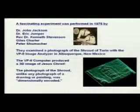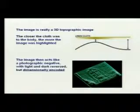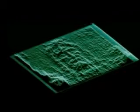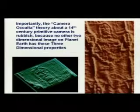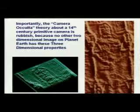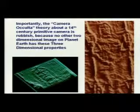There is no other two-dimensional image on the planet that will do this because this shroud is dimensionally encoded. The shroud is actually a three-dimensional topographical image — the closer the cloth was to the body, the more the image was highlighted, and the image acts like a photographic negative with light and dark reversed but dimensionally encoded. It's this dimensional encoding which is so unique, which is why I'm absolutely certain the Shroud of Turin was not a fraud, because nobody can do this even today in 2009. Some people think Leonardo da Vinci had a primitive camera called a camera obscura — but no camera today can produce these three-dimensional properties.